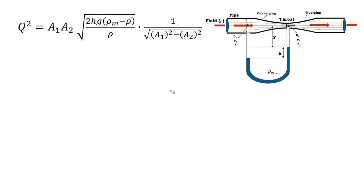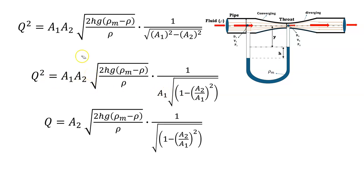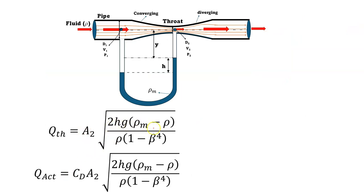Further simplifying: Q = A2 · √[2·H·g·(ρM − ρ)/ρ] · 1/√(1 − (A2/A1)²). Since A2/A1 = (D2/D1)² = β², the theoretical flow rate is Q_th = A2 · √[2·H·g·(ρM − ρ) / (ρ·(1 − β⁴))]. The actual flow rate is Q_actual = CD · A2 · √[2·H·g·(ρM − ρ) / (ρ·(1 − β⁴))], where β = D2/D1.